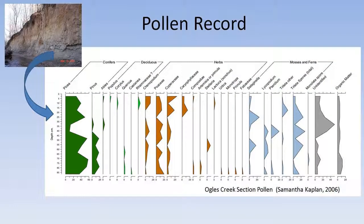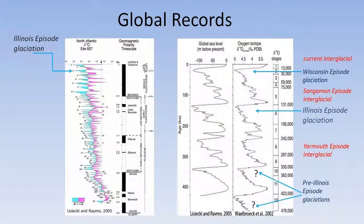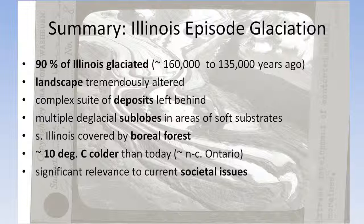The final thing is the pollen. We don't have many sites with pollen, but this one shows a dominance of spruce vegetation and some pine and various herbs and mosses that confirm a boreal environment at that time. Stepping back at the big picture, the Illinois glaciation was the second-to-last one in the whole sequence of cold and warm climates, sandwiched between the Wisconsin and the pre-Illinois glaciation. To summarize: about 90% of the state was glaciated at the time, it had tremendous alteration of the landscape, and we think we had a boreal forest cover and maybe 10 degrees colder than today.